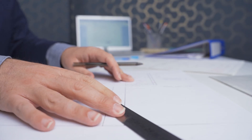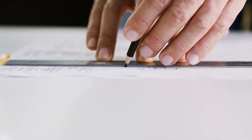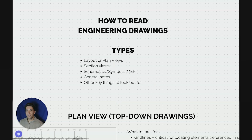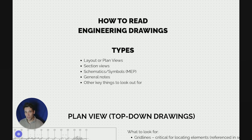We'll go through the different types of engineering drawings, the different layout views, different section views, how to pull it all together, and how to understand what we're building from a set of drawings. First up, what are the different types of drawings we need to understand? There are layout or plan views, section views, schematics or symbols if we're dealing with mechanical, electrical and plumbing drawings, and general notes which apply to all design packages.